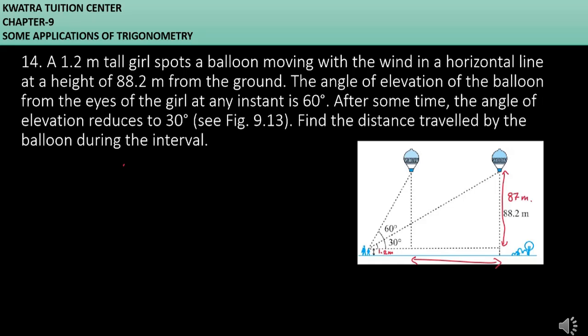Now you can see that we have two triangles here. Let's mark them first. This is C, this is A and B. And this is B, P and Q.